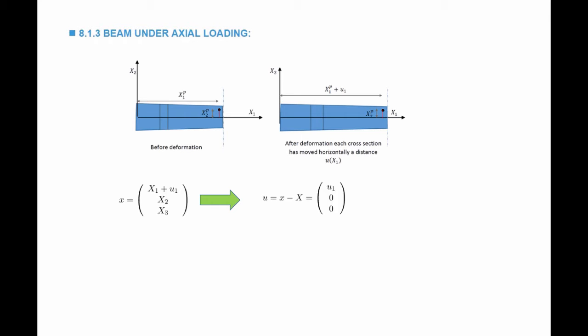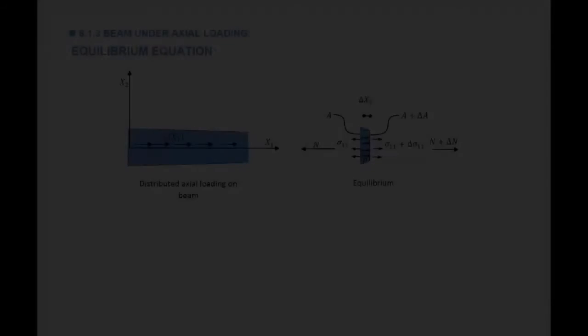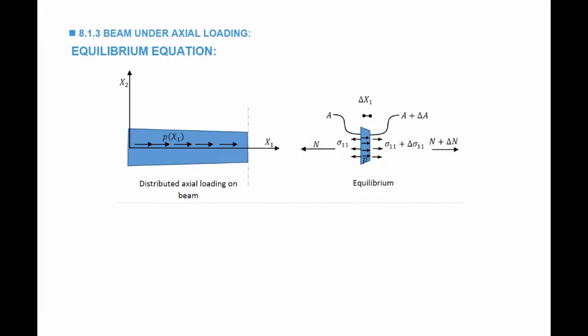The strain is the gradient of the displacement plus the transpose of the gradient of the displacement, divided by 2. You get only one non-zero strain component, which is epsilon 11, equal to du1 by dx1.